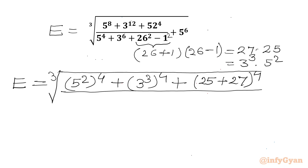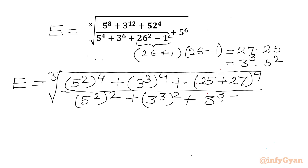Over: 5 to the power 4, which we can write as (5 squared) squared; plus 3 to the power 6, which we write as (3 cubed) squared; then we have 3 cubed times 5 squared; plus 5 to the power 6, which we can write as (5 squared) to the power 3.